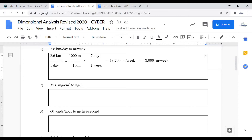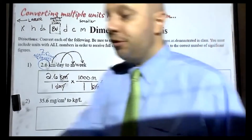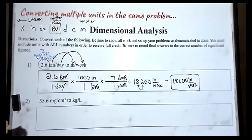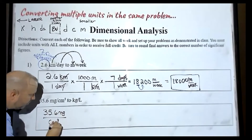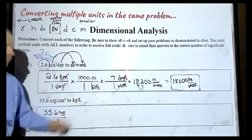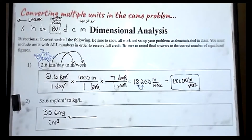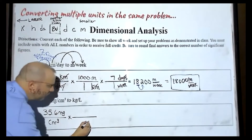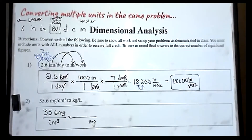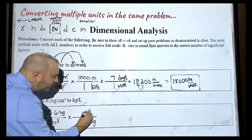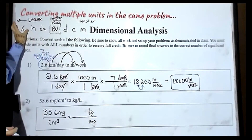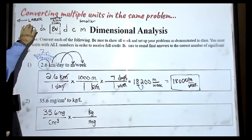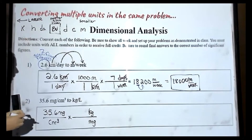Let's continue with problem two. In problem number two, we have 35.6 milligrams per centimeter cubed, and we're trying to get to kilograms per liter. I want to get rid of milligrams, so I'm going to put milligrams on the bottom and kilograms on top. I go up to my chart and figure out which one is the bigger unit — kilograms way over on the left, or milligrams over here. Clearly the larger units are on the left side, so kilograms is going to be the larger unit. We're going to put the one with kilograms.